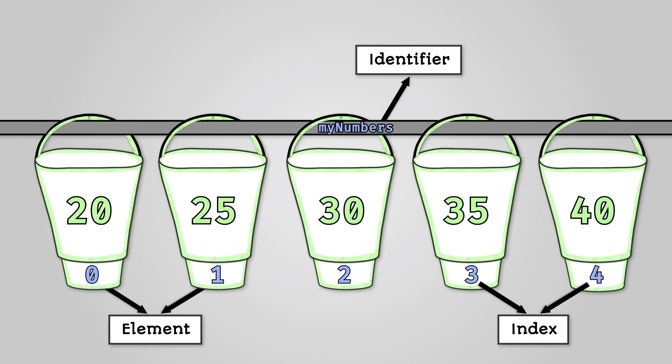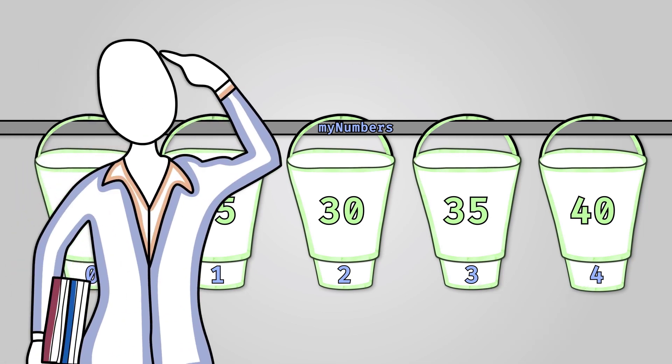Arrays are usually fixed in size. When you create an array you have to say how many data items or buckets it is going to contain. They are said to be immutable. The array is stored in contiguous memory. This means that the elements are stored next to each other in memory.